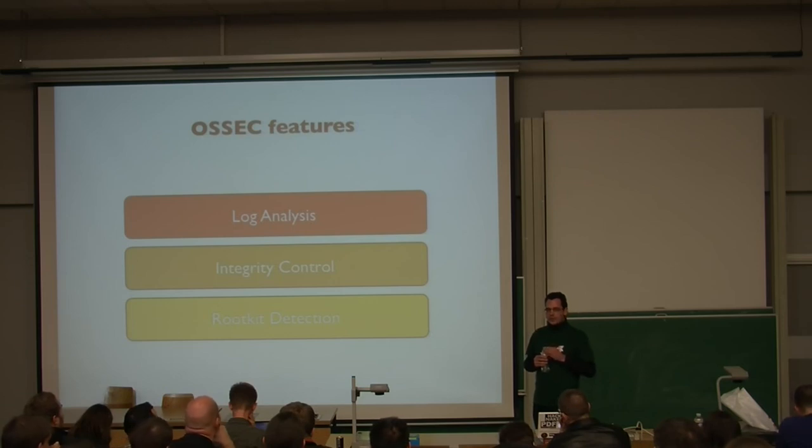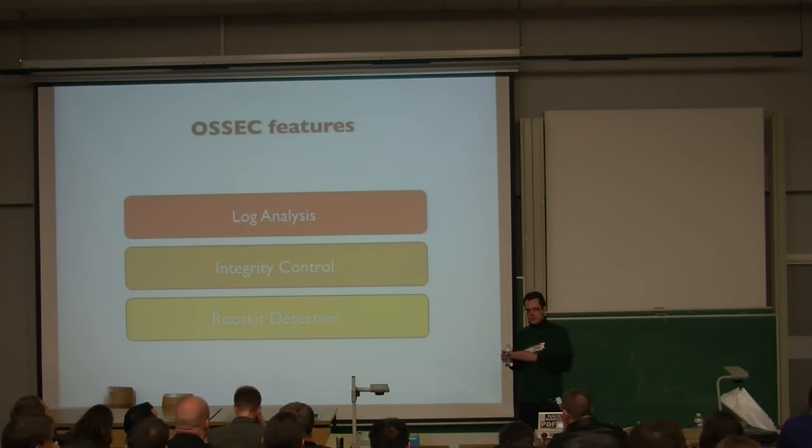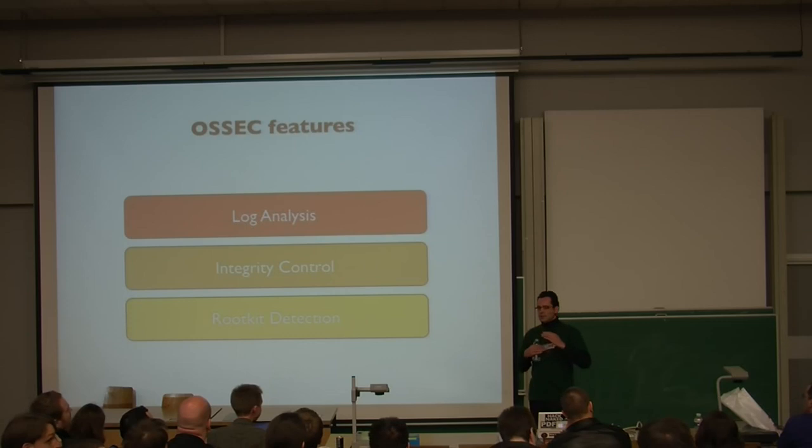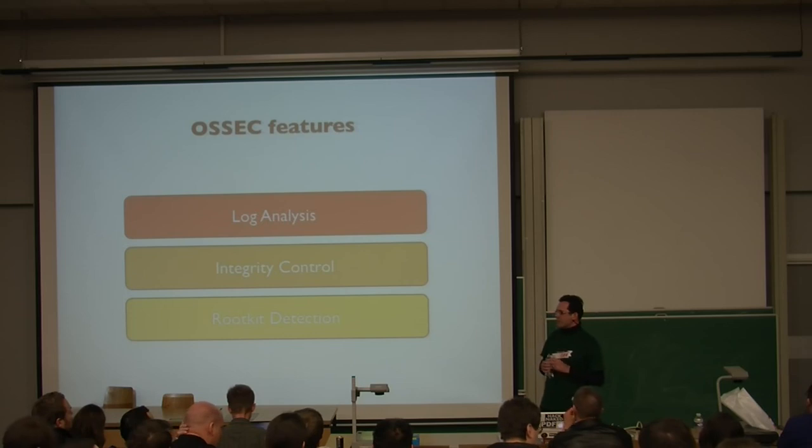Then, the integrity control. You can monitor several folders on your system. And when a file changes, an alert can be thrown with the active response, which is a part of OSSEC. You can have the original file put back, so your system remains, the integrity is controlled. And then, the rootkit detection. It's not a replacement for any anti-malware solution, but it's a basic set of signatures for configurations that are interpreted as rootkits.